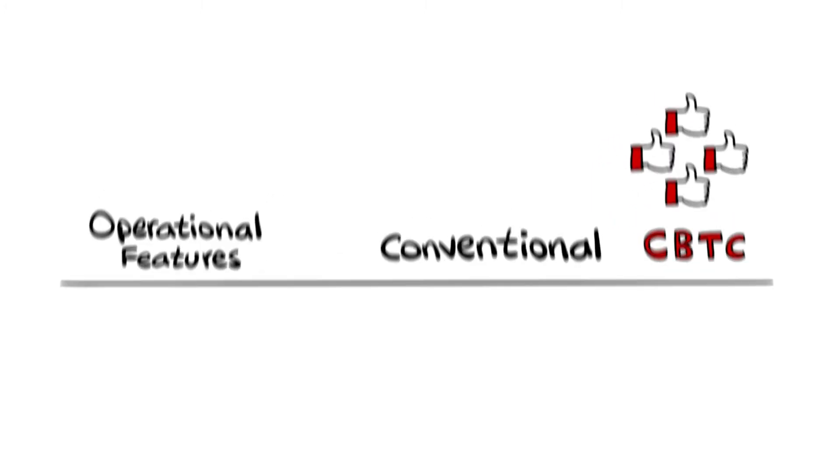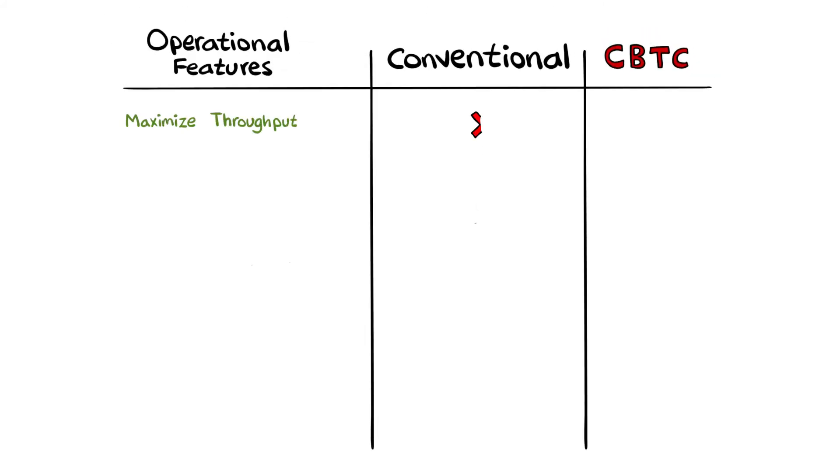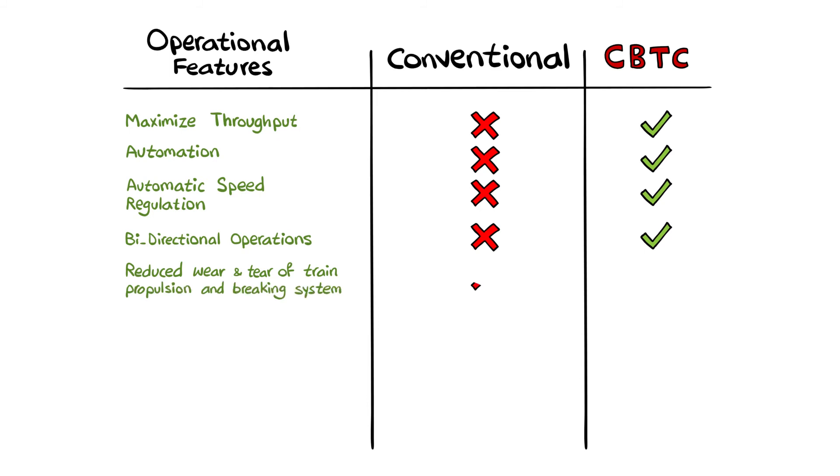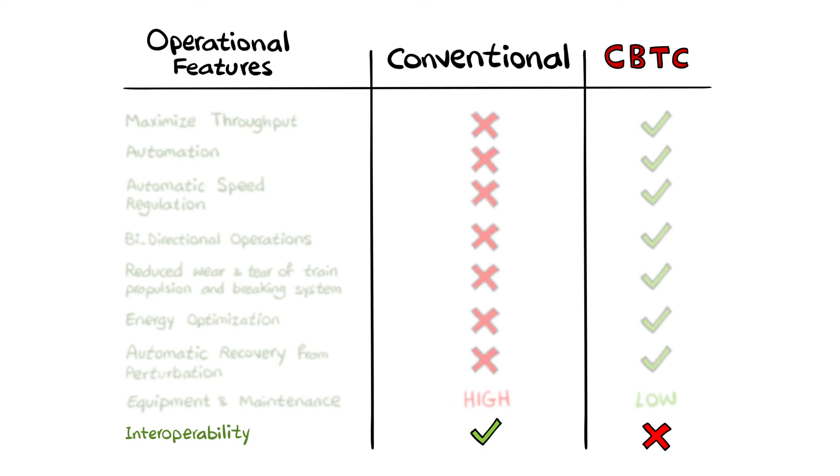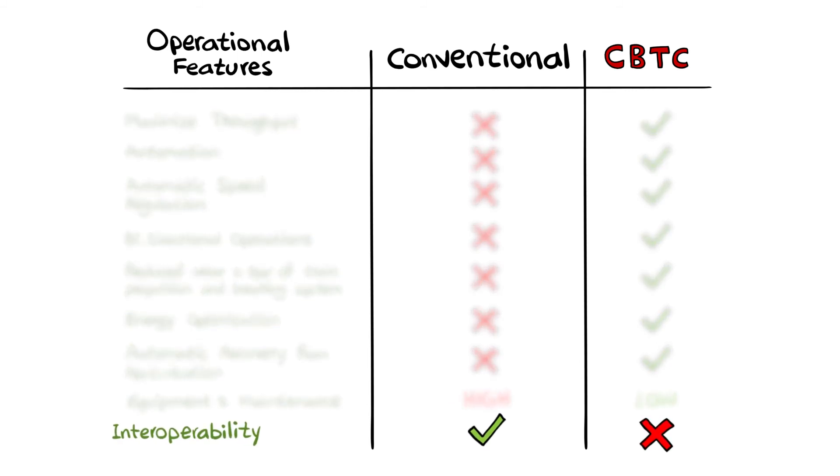When comparing the operational capabilities between conventional and CBTC signalling, CBTC has an overwhelming advantage when comparing operational features such as maximize throughput, automation, automatic speed regulation, bi-directional operations, reduce wear and tear of train propulsion and braking system, energy optimization, automatic recovery from perturbations, and equipment and maintenance which is low or limited. The only advantage for conventional signalling is interoperability and even that advantage is shrinking over time as CBTC suppliers begin to develop interoperable solutions.